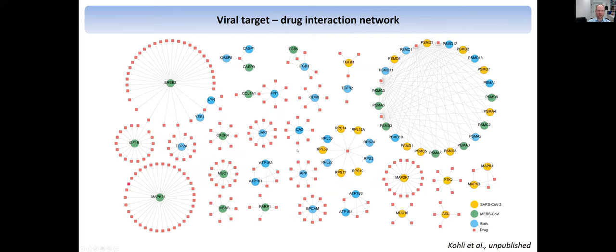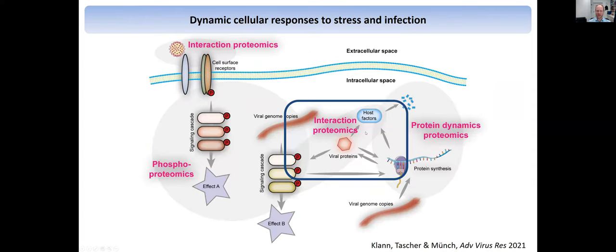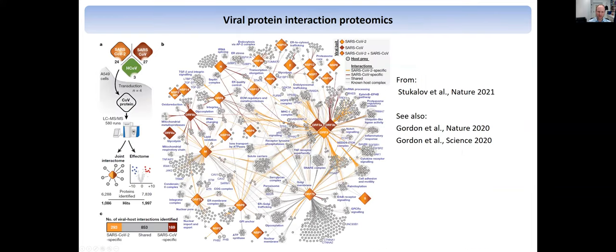We looked at viral target and drug interaction networks to identify drug targets that could play a role, and we identified a number of clusters. I'll now move to the interaction proteomics, and will mention it in one slide because we haven't contributed anything here to SARS-CoV-2. But it is of course a very important and informative way to get some information. This is an example from the Pichlmair lab, but there were also great papers from the Krogan lab where they expressed viral proteins, often in HEK cells, and then looked in pulldowns what they interact with, identifying common targets across viral proteins from SARS-CoV-2 versus SARS-CoV or HCoV.